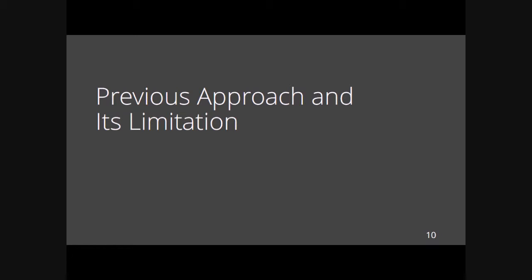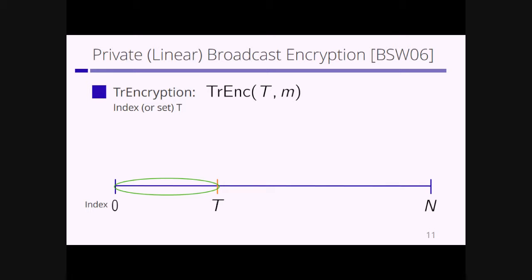Now let's look at the previous approach and its limitation. Boneh-Naor proposed a traitor tracing scheme using a Private Linear Broadcast Encryption scheme, or PLBE for short. In PLBE, there is a trapdoor encryption algorithm that takes an index and a plaintext as input. This trapdoor ciphertext is for users in the region from index 0 to index t. If the secret key for identity A_i is in this region, the user can decrypt the trapdoor ciphertext using secret key SK_i; however, if the index is outside this region, they cannot decrypt it.